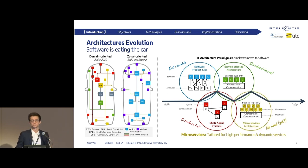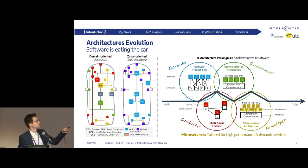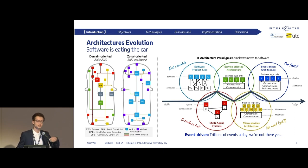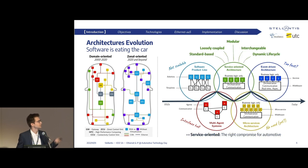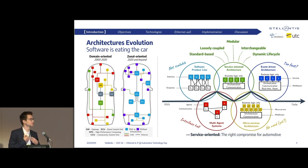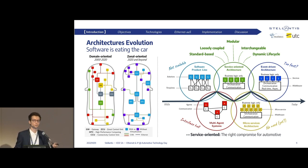From cloud computing, we also saw smaller and more independent modules and services, as well as extremely high-performance middlewares such as event-driven architectures. But for onboard architectures, we don't really need that today. This is why SOA is seen as the next architecture paradigm — it brings, with standards, a modular architecture with interchangeable components for a software-defined vehicle ecosystem.